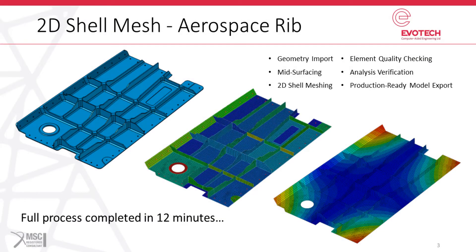We're going to look at a quick speed test for the 2D Shell Mesh Aerospace RIB. This will involve importing the geometry, mid-surfacing, 2D shell meshing, checking the element quality, running analysis verification through normal modes, and then exporting a production-ready model. The full process will complete in less than 12 minutes.